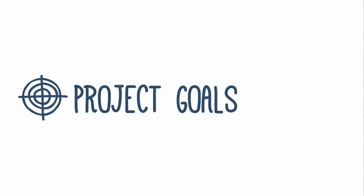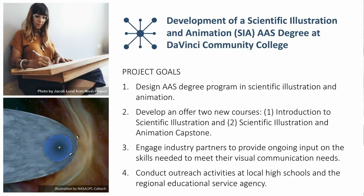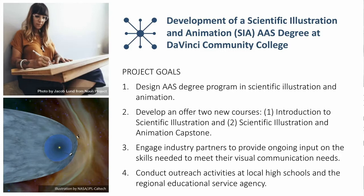Starting with project goals — the Da Vinci team identified four clear-cut goals: design the AAS degree program in scientific illustration and animation; develop and offer two new courses including an introduction to scientific illustration and a capstone course; engage industry partners to provide ongoing input on skills needed; and conduct outreach activities at local high schools and the regional educational service agency. These fit the profile of SMART goals — specific, measurable, achievable, relevant, and time-bound.